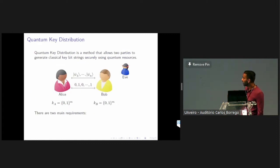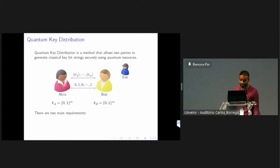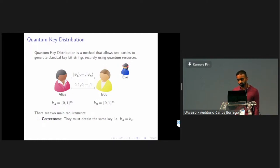In QKD, you have two parties, Alice and Bob, whose goal is to establish a shared classical secret key. They are allowed to share quantum resources and can also communicate classically. There is an adversary typically called Eve trying to get information about the key. They have two main requirements: correctness — KA should equal KB — and security, which means Eve must get little to no information about the key.